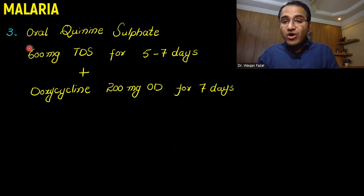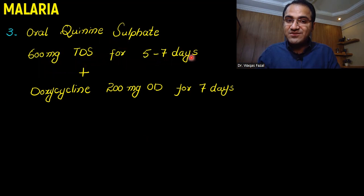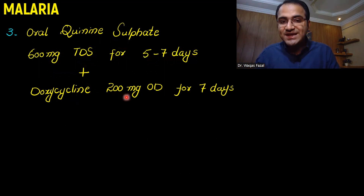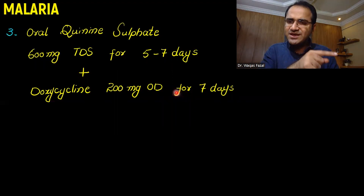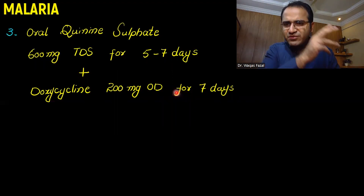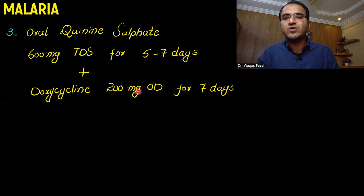You can also use oral quinine sulfate 600 mg three times daily for five to seven days with doxycycline 200 mg once daily for seven days if the preferred drugs are unavailable. If the preferred artemisinin-based drugs are available, you should use those; oral quinine is reserved for when those drugs are unavailable.